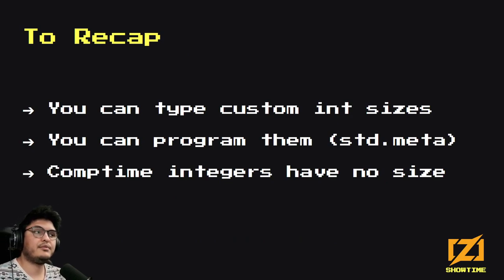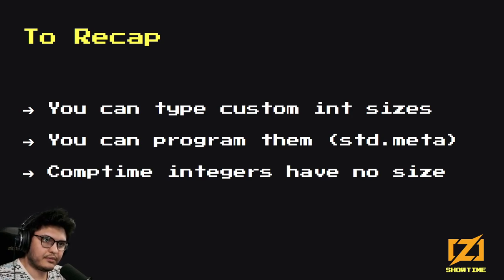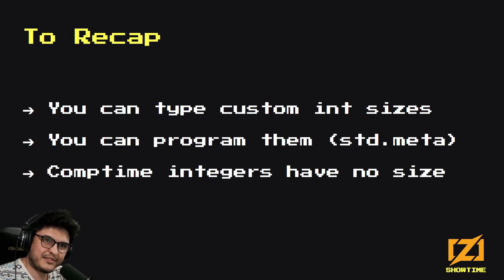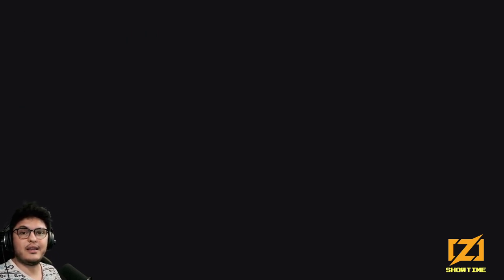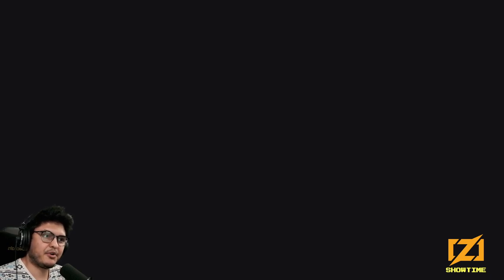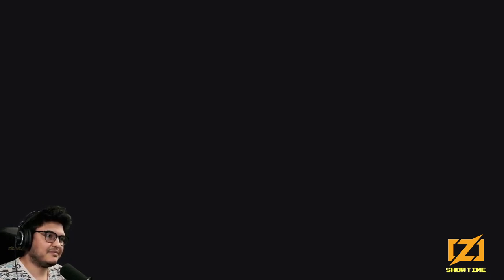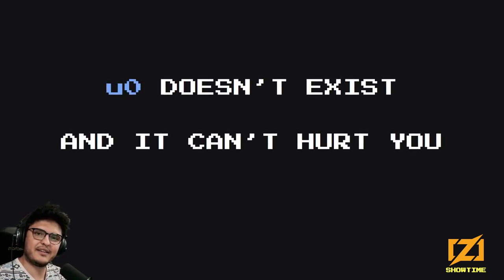To recap: you can type your own custom ints — nice. You can program them using std.meta — also nice. And when it's comptime, you don't have to specify the size, because comptime is more self-aware; it can look in the mirror and recognize itself, almost. Now, if you're new to Zig, that's it — you can go home. Congratulations. Write your stuff. There's nothing else to see here. The world is a safe place. No evils hiding in the shadows. For you, the show ends here.